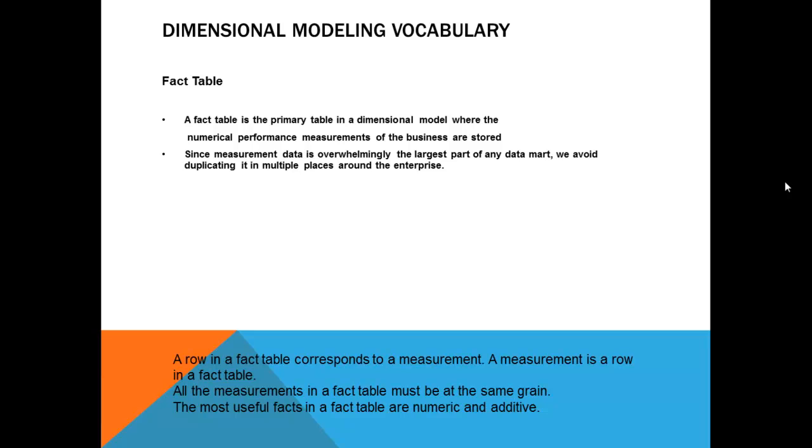The fact is 20 beers are sold. That is my point of sale. That is my business. So in a dimensional model, fact table is the primary table because that is the revenue generator for you. That is where the metric is for you.